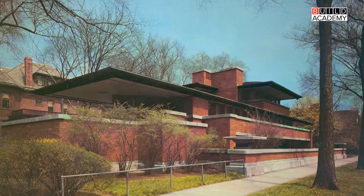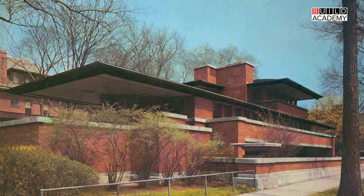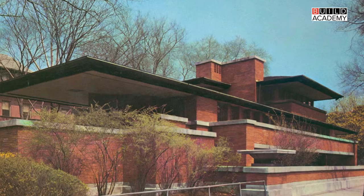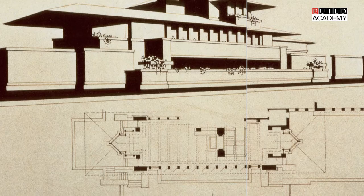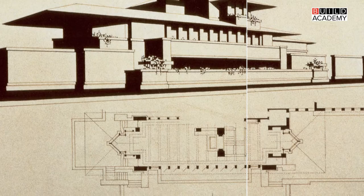Over 500 of Wright's buildings were built throughout much of the United States. We see his career beginning with the Prairie style in the early 1900s, with low sloped overhanging roofs, a massive chimney core, interpenetration of inside and outside, and the open plan which is going to characterize much of the architecture of the 20th century.